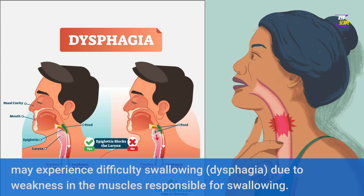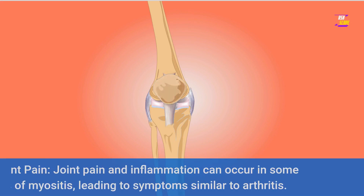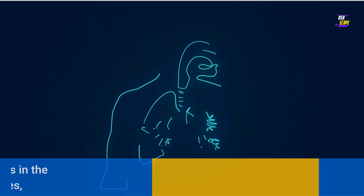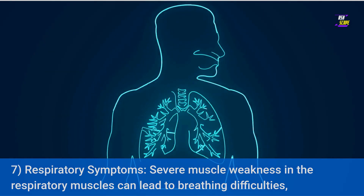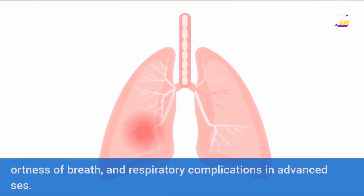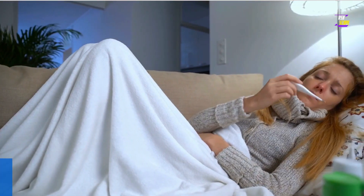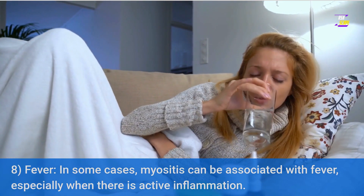6. Joint Pain — joint pain and inflammation can occur in some cases of myositis, leading to symptoms similar to arthritis. 7. Respiratory Symptoms — severe muscle weakness in the respiratory muscles can lead to breathing difficulties, shortness of breath, and respiratory complications in advanced cases.